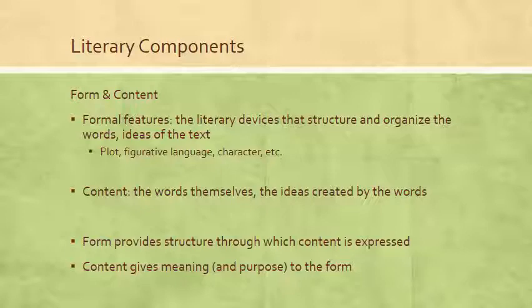If we want to divide a literary text into its basic elements, one way is to think about its form and its content — and just like message and meaning, these two things are intimately connected and can't really be separated. When we talk about form, we're talking about formal features, the things that give shape to the text: the literary devices that structure and organize the words and ideas — so this could be plot, figurative language like metaphor and simile, characters, line breaks, rhyme, chapter breaks, however the text is literally structured. The content of the text is the words themselves, the ideas that are created by the words.